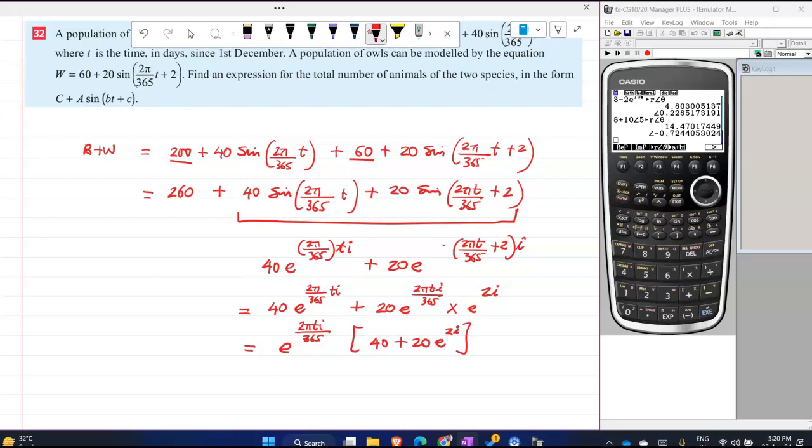Now use your calculator. This 260 is there only, which I am not writing. I will write, I will get that in the end. So 40 plus 20—let me put a bracket—and your angle is in radians, correct? You have to write in this r theta form. So what is it? E raised to 2πTi/365, this is 36.5.